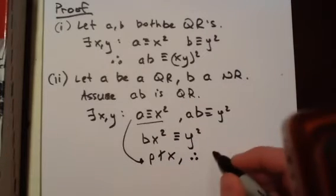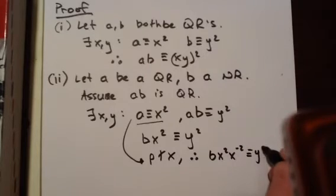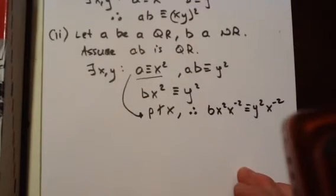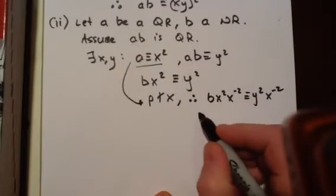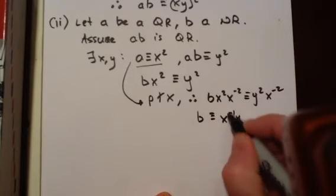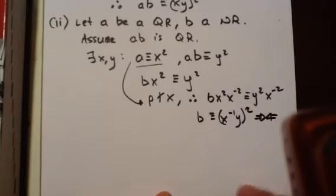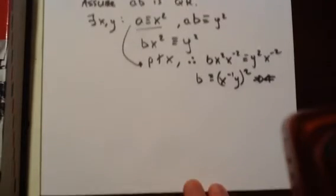Therefore, B X squared X to the minus 2 is congruent to Y squared X to the minus 2 mod P. And so B is congruent to X inverse Y quantity squared. And this contradicts that B is a non-residue. That completes the proof of the second case.